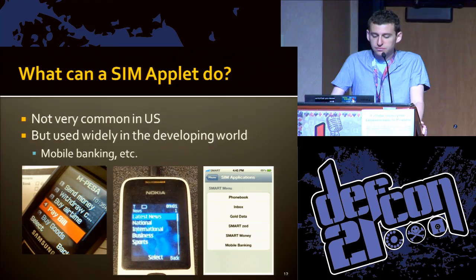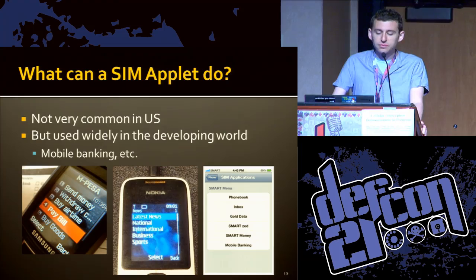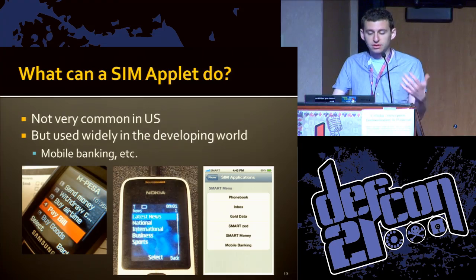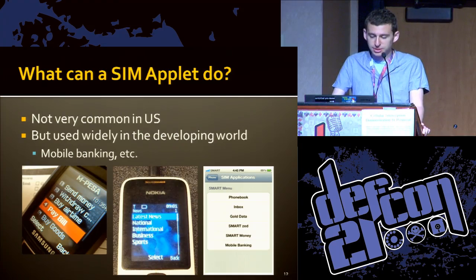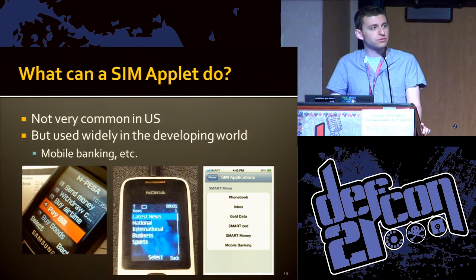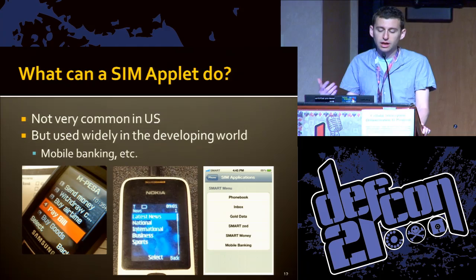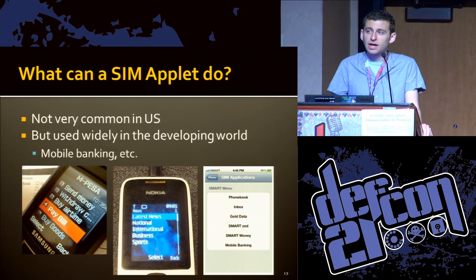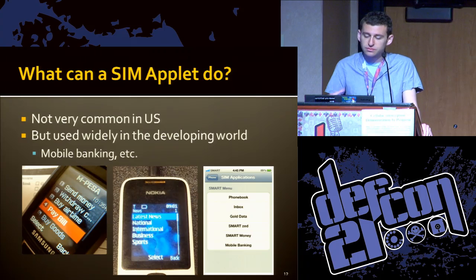Just a few examples of SIM applets in the wild: on the far left we have M-Pesa, a very popular mobile payment system in Kenya with over 15 million users, almost all of which is based on SIM applet technology. It's also sometimes used for menus to top up your phone or get other information. Not very common in the US, but much more common in other places.